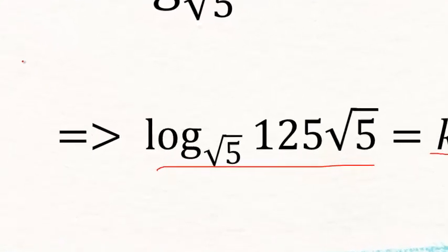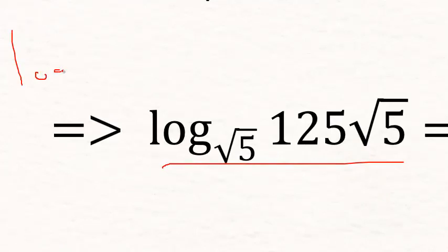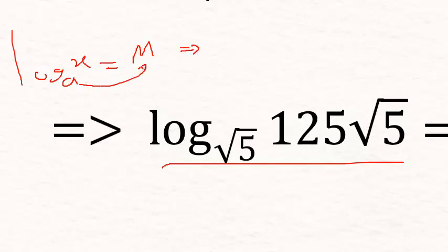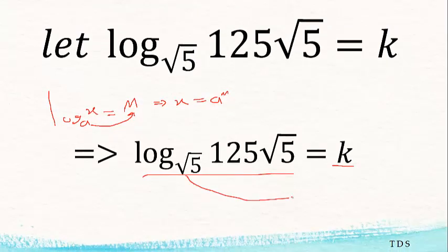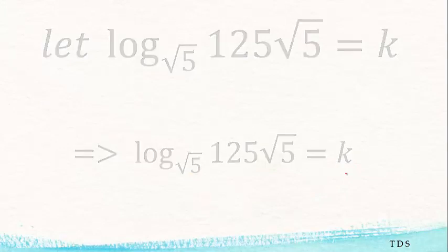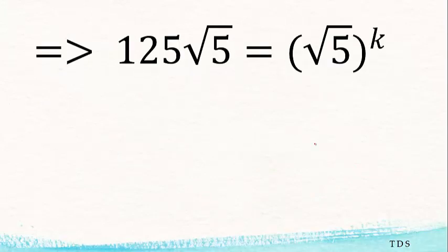Now I believe you know that log X to base e equals n is the same as e to the power n equals X. So using that rule, with base 5, we raise 5 to the power k to get 125√5. So five to the power k equals 125√5.